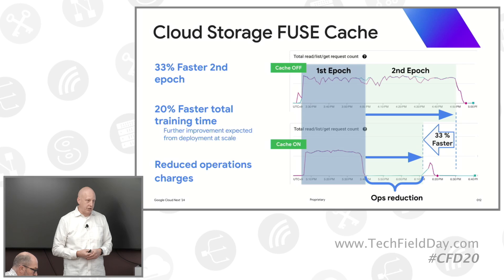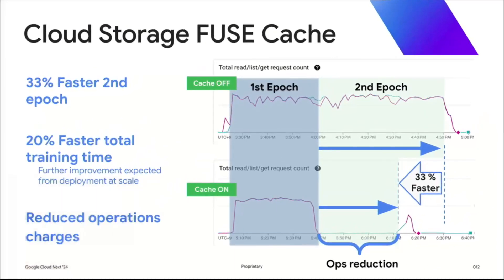We introduced Cloud Storage Fuse with caching just a couple months ago — this is now GA. This works similarly to Anywhere Cache where customers can set the amount of cache they want on each node, GPU and TPU. When you run that second epoch, the data is already there or most of the data. Now that second epoch ran 33% faster than the first one, and the third one wasn't that much slower either. You get this idea of decreasing the amount of training time so you can increase the frequency at which you do trainings. The epoch ran faster because the cache had all the data rather than loading back to storage. That's where they saw 20% total training time reduction, 33% in that second epoch.